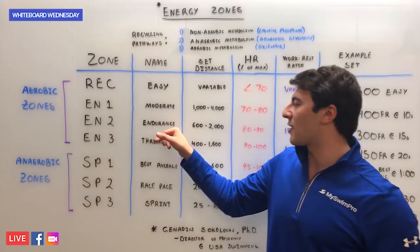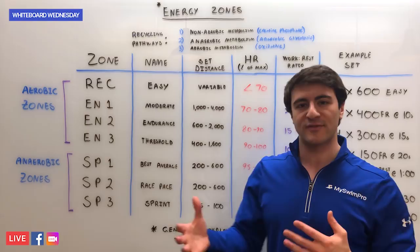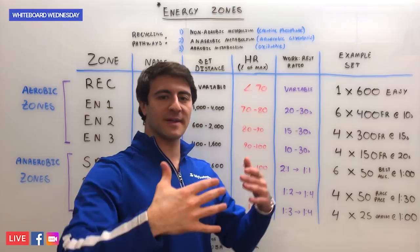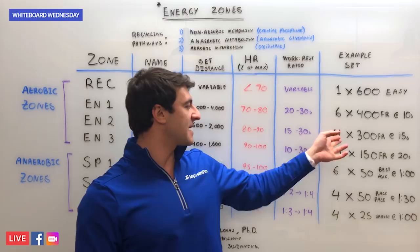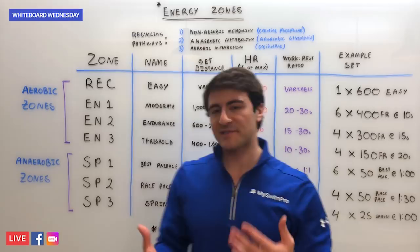EN2 is called Endurance in MySwimPro. These are sets anywhere from 600 to 2000 meters — a little bit shorter than EN1 with intensity a little more elevated. You're looking at a heart rate anywhere from 80 to 90% effort, so you can sustain this for a relatively long period of time but you're putting in work. An example set might be four 300s freestyle taking only about 15 seconds rest.